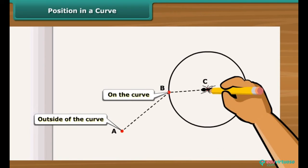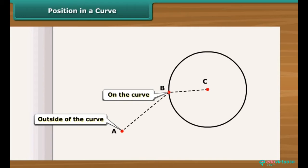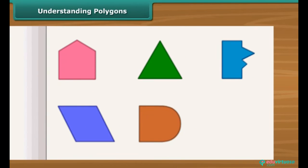At position C, the ant is at interior or inside of the curve. These figures displayed on a screen are closed curves. Each of these curves have different shapes.